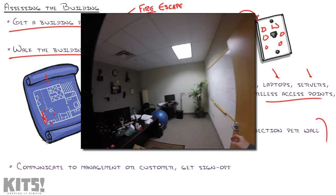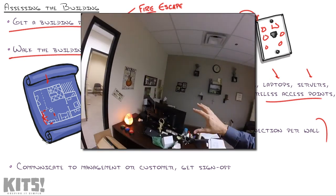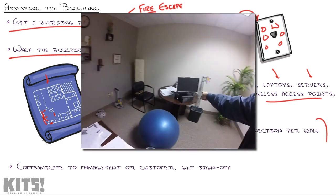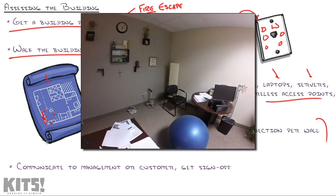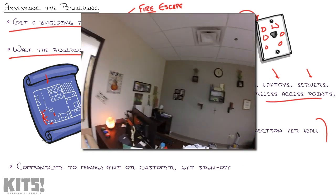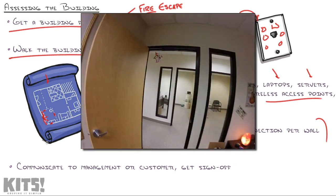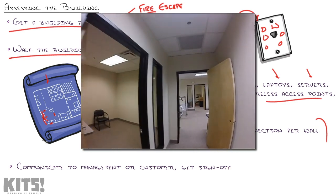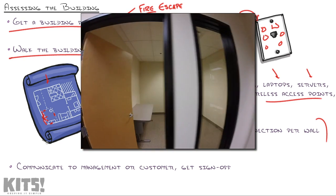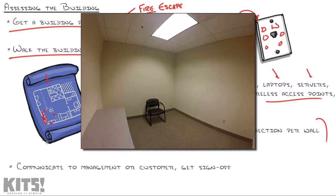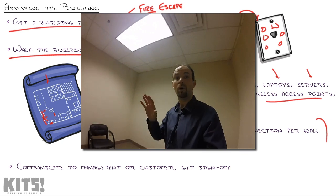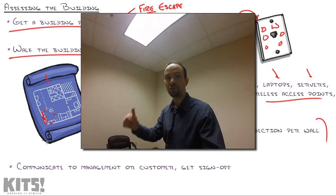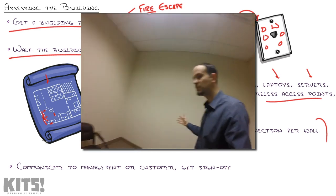Walk across the hall to this side — I see a computer, an IP phone, a laptop, and another computer. Over there is the network wall jack. Still not seeing any wireless access points on the ceiling. Come over here — look at this room. It's empty. This is where I would start questioning: who's going to be in here? Where are they going to be sitting? What devices are they going to have? Are they going to have printers, computers, phones in this room?